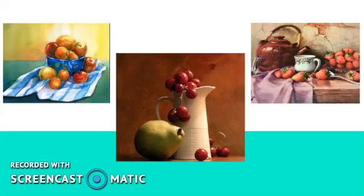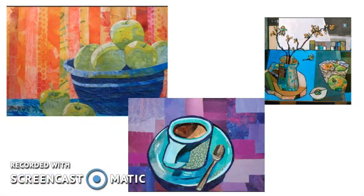Today we're going to be doing some still life art, and these are examples of still life art that you see here on the screen. Artists use still life to make art from observation of real-life objects — usually fruit, flowers, things that you might see in the kitchen. These three examples are still life made using different types of techniques and materials, and using different media can enhance the colors and textures in still life art.